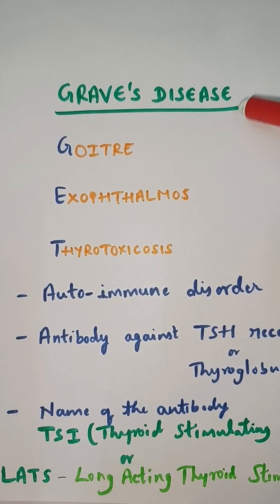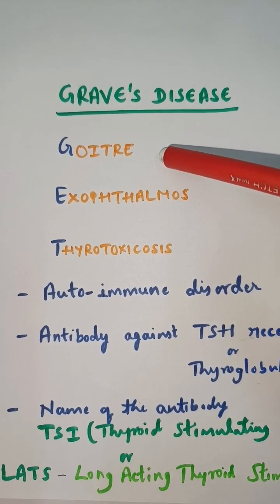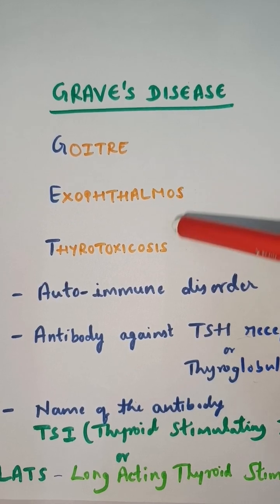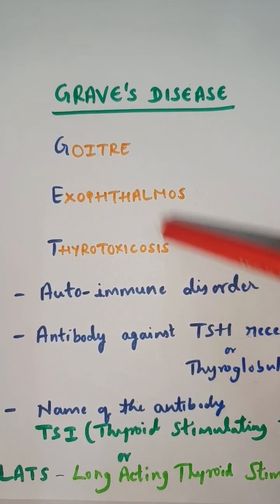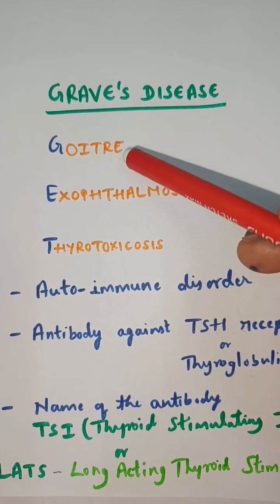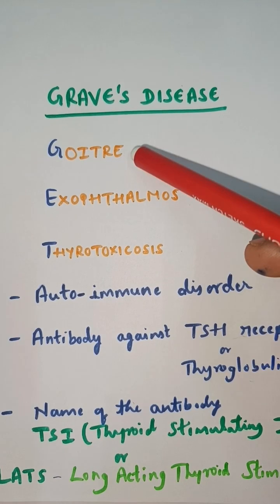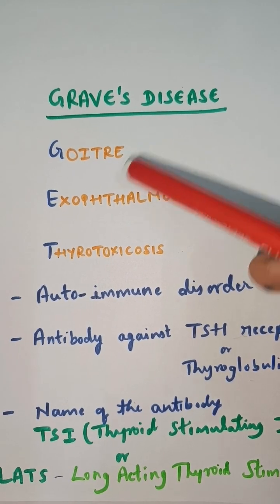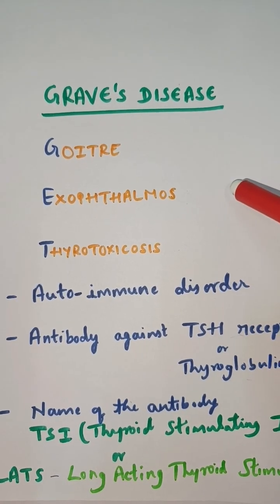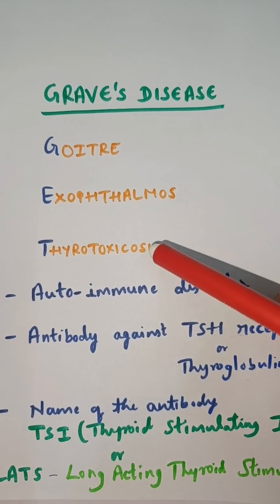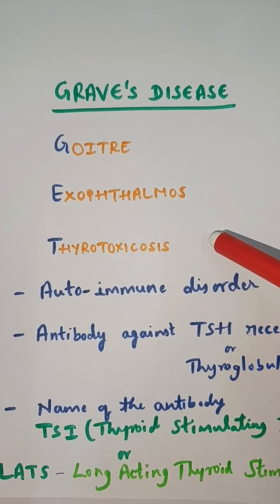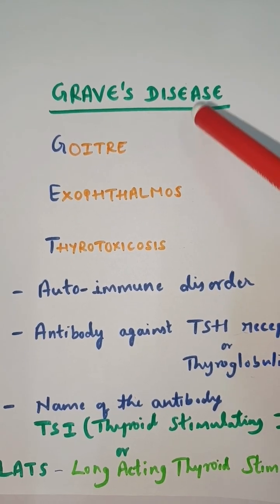Graves' disease is a thyroid disorder in which you can see goiter, exophthalmos, and thyrotoxicosis. You can remember it as G-E-T. Goiter means swelling of the thyroid gland, exophthalmos means bulging of the eyeball, and thyrotoxicosis means the clinical features of hyperthyroidism will be seen.